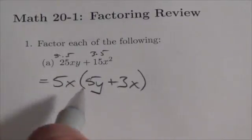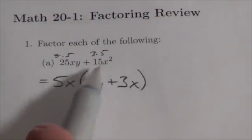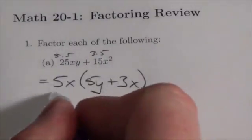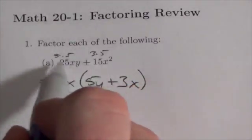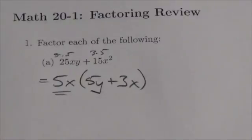I'm looking at this and I'm saying look, something has been distributed to these two terms. What has that been? Well, because 5x as a factor shows up in both of those terms, it was the 5x that was distributed, and so when I write it this way, it's in factored form.